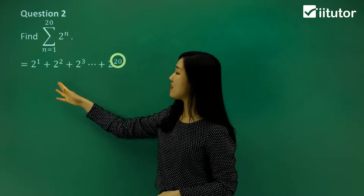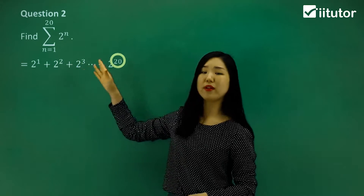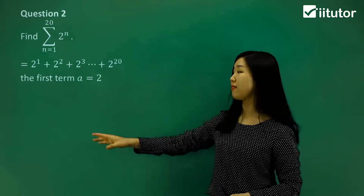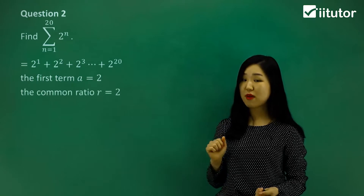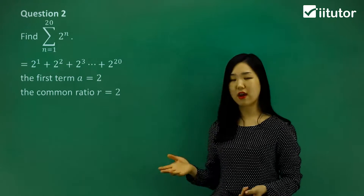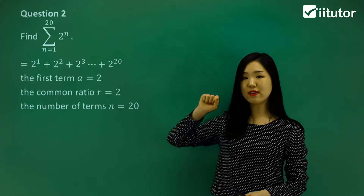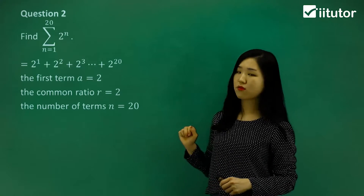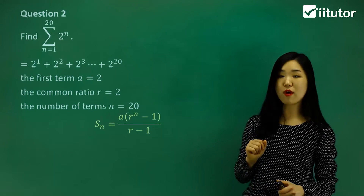Each time we're multiplying by 2, and the powers are increasing by 1, so the common ratio is 2. The first term in the series is 2, and the common ratio is also 2. You multiply by 2 each time to get every consecutive number. The number of terms is simply 20, since it starts from n equals 1 all the way to n equals 20. So we'll put that into our sum formula for geometric series.